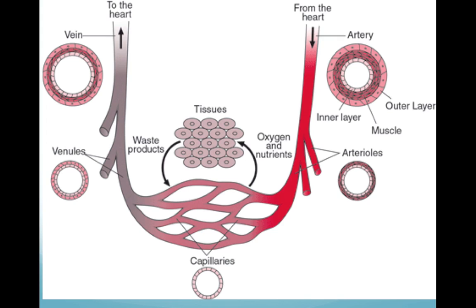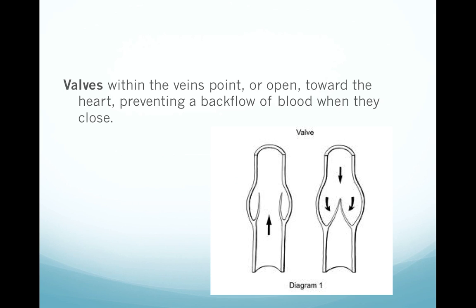Venules and veins collect blood from the capillary beds and then take it to the heart. First, the venules drain the blood from the capillaries, and then they join together to form a vein. The wall of a vein is much thinner than that of an artery — they don't have that muscle layer. Valves within the veins point in a single direction, opening towards the heart, which prevents blood from back-flowing down the vein. If the blood tries to go back down the vein, those valves snap shut and prevent that from happening.